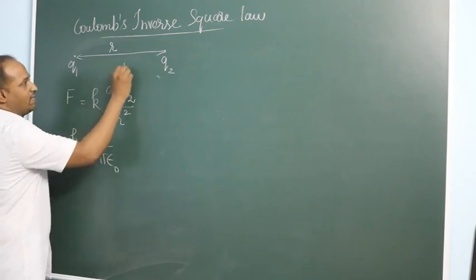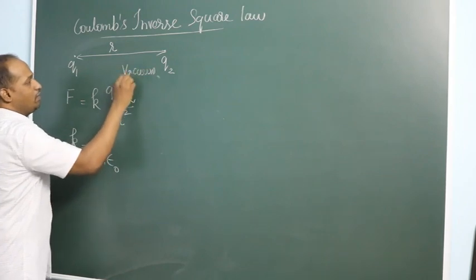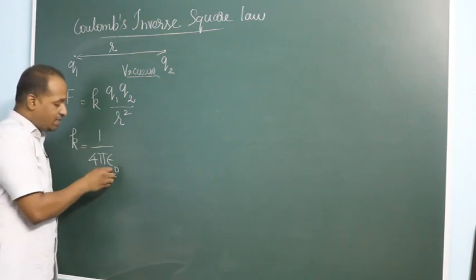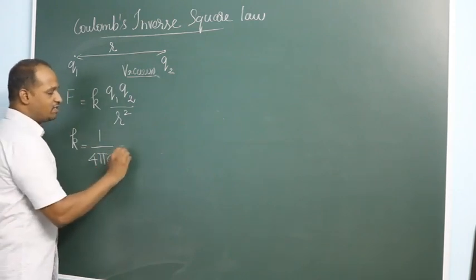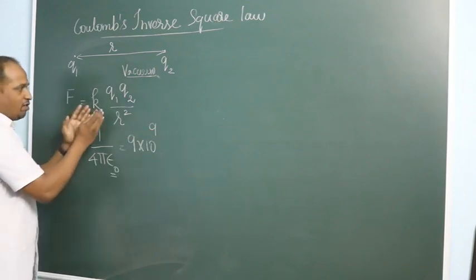Assuming that these two charges are kept in vacuum, then the value here is epsilon naught. The constant introduced here is epsilon naught. Its value is around 9 into 10 power 9, which has got units.